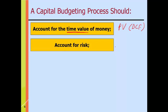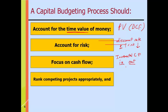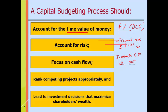We account for risk by the choice of the discount rate R in our present value calculation — higher R for more risk, lower R for less risk. We also focus on cash flow, estimating the incremental cash flows period by period, which involve both inflows — the money the project generates — and outflows — what we spend to build the project. Finally, we rank competing projects in order of either net present value or internal rate of return, and use that information to make sound investment decisions that maximize wealth.